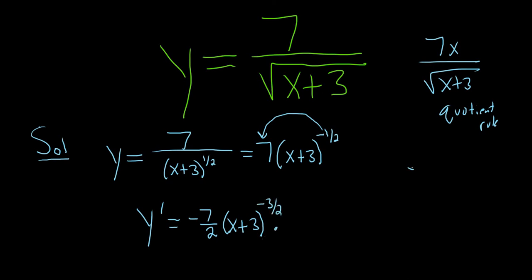And then times the derivative of the inside. Well, the derivative of x is 1 and the derivative of 3 is 0, so we just get 1 here. So this is equal to negative 7 halves times, I'll go ahead and bring this down, x plus 3 to the 3 halves.